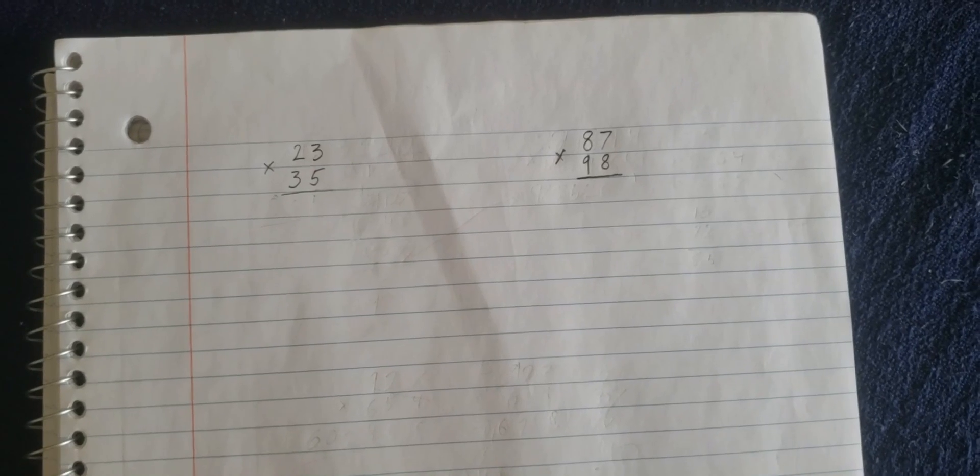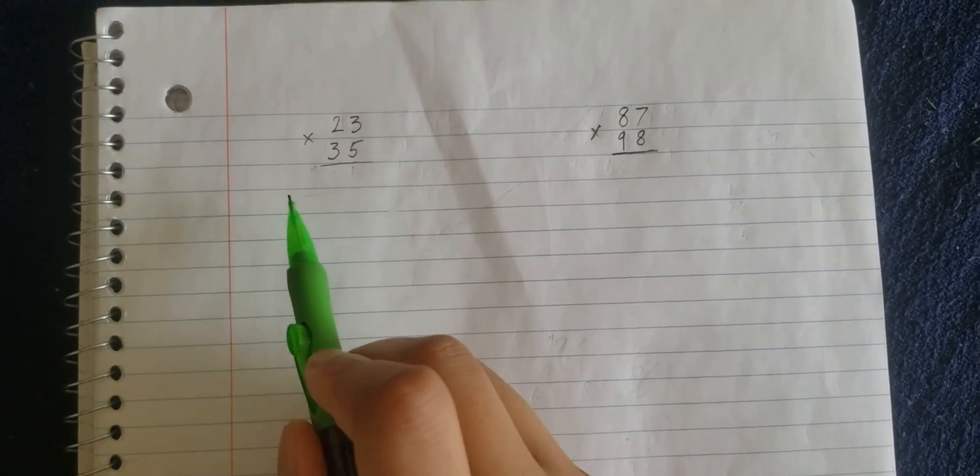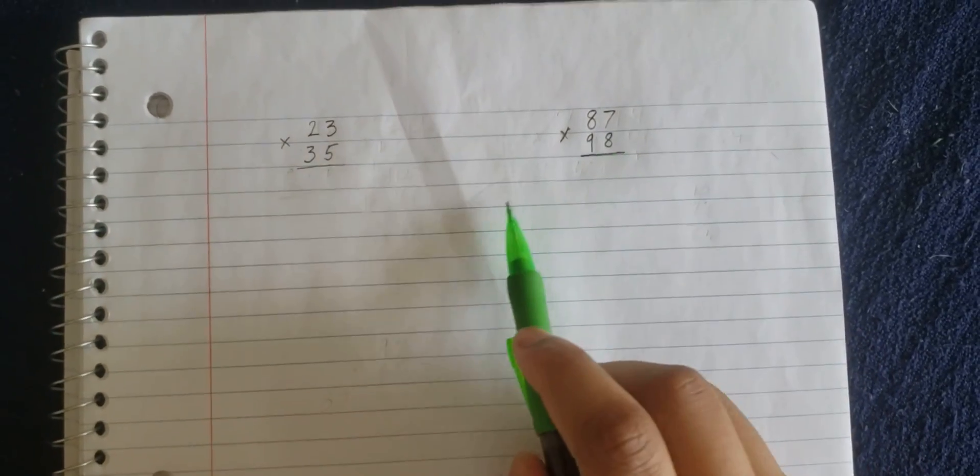For my first video, I'm going to be teaching you guys the method to fast multiply two digits by two digits. I have two questions here. The two questions are 23 multiplied by 35, and 87 multiplied by 98.